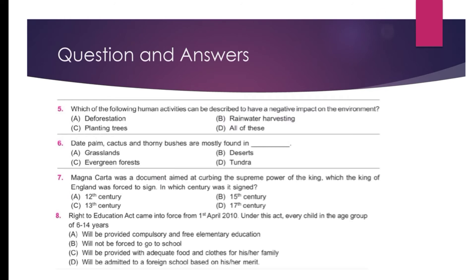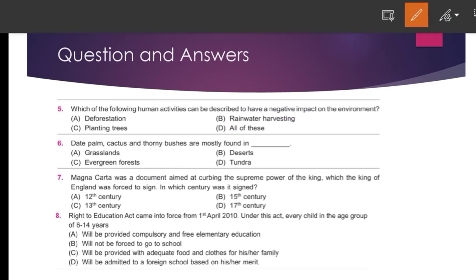Our next question is: Which of the following human activities can be described as having a negative impact on our environment? Deforestation means cutting trees in a huge amount, so deforestation is a correct answer. Rainwater harvesting is not a correct answer. Planting trees is also not a correct answer. So Option number A, Deforestation, will be correct.